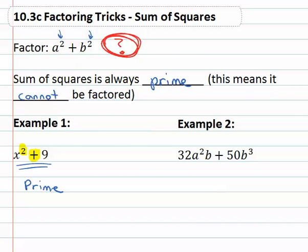Well, there is one thing we have to be careful of, and that is the greatest common factor. In the second example, 32a²b + 50b³, there is a greatest common factor that we can factor out of that.